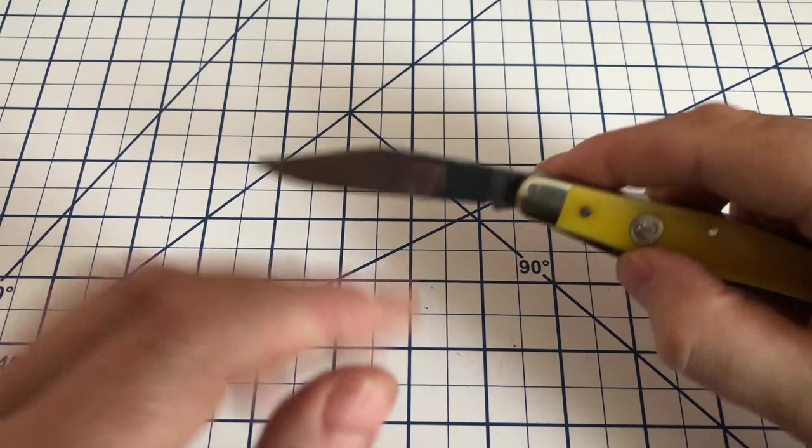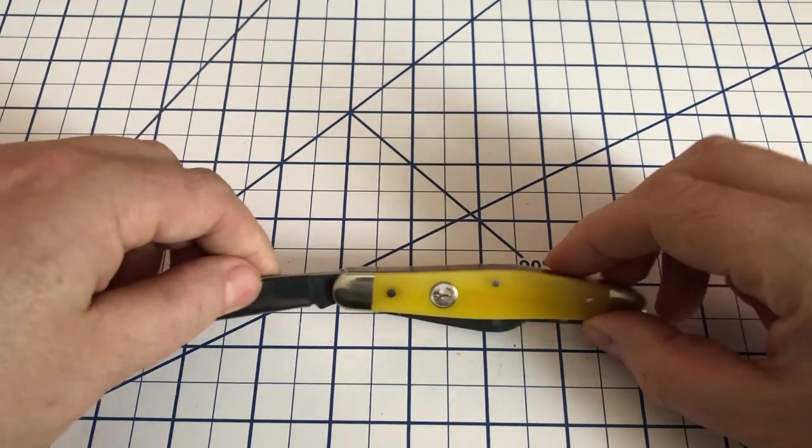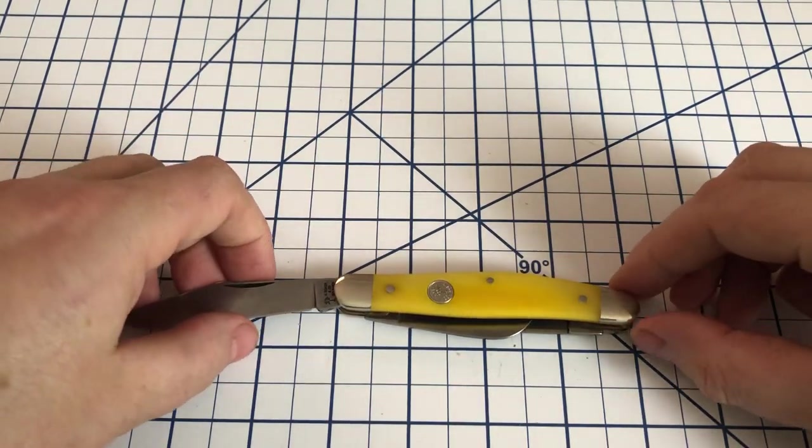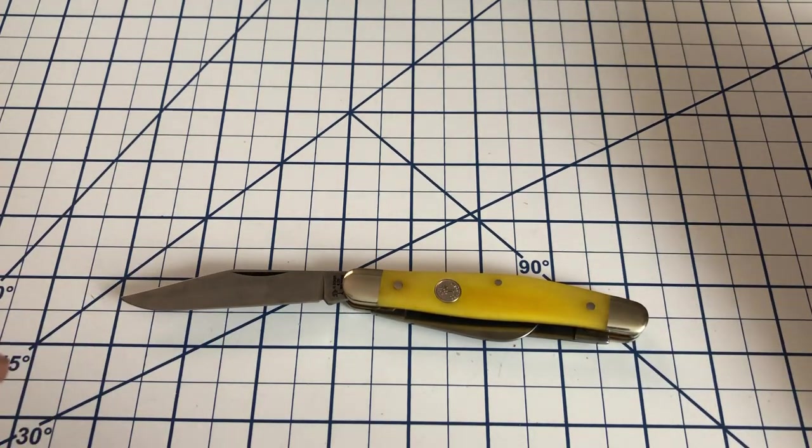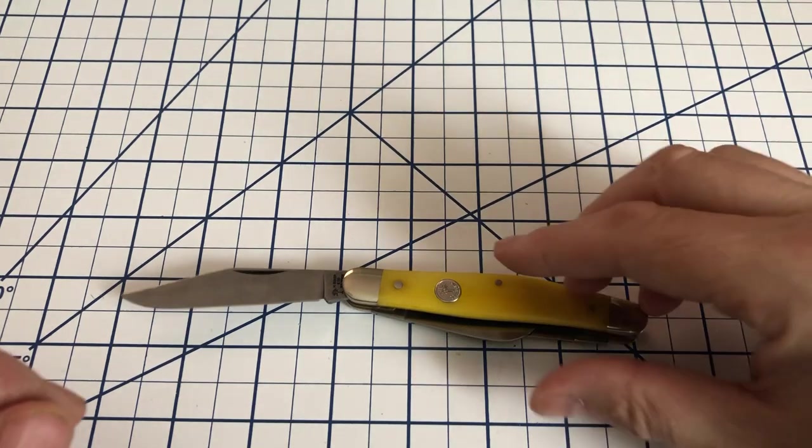Nice stockman, full-size stockman, nice in hand. The closed length is going to be about four inches and as you can see, it's about seven inches when the main blade is open.